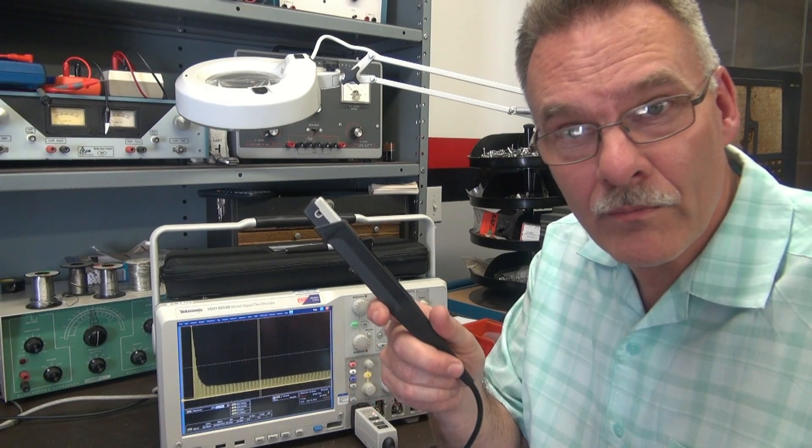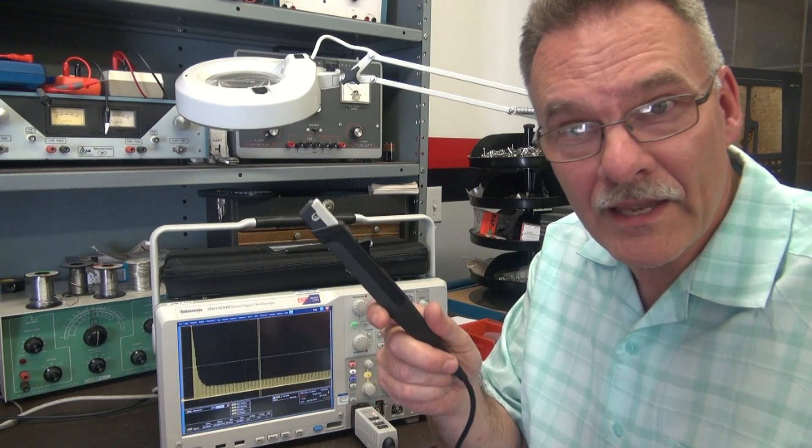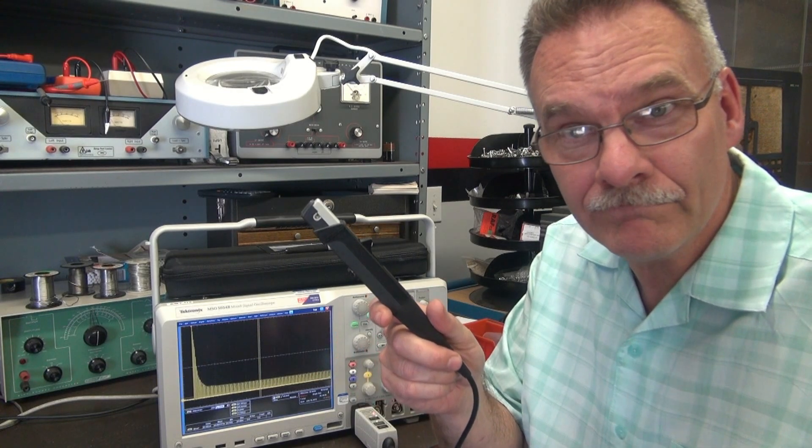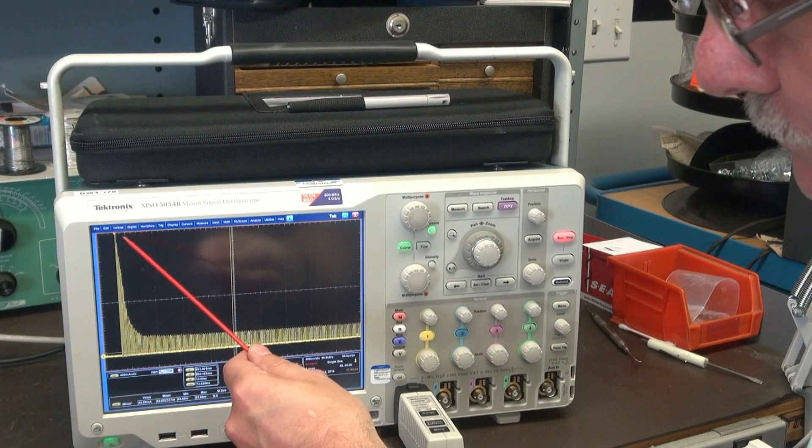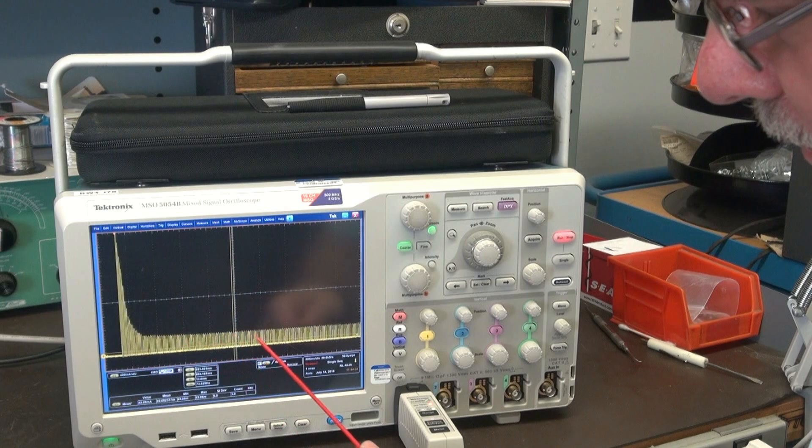This is a very sensitive probe, good down to 1 milliamp of current with high precision. So here is a typical current trace that we'll be looking at. This would be your current peak and then we'll come down to idle.